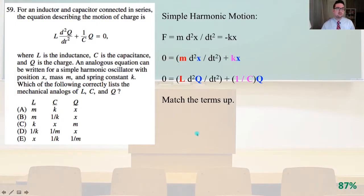Number 59. For an inductor and capacitor connected in series, the equation describing the motion of the charge is L(d²Q/dt²) + (1/C)Q = 0, where L is the inductance, C is the capacitance, and Q is the charge. An analogous equation can be written for a simple harmonic oscillator with position X, mass M, and spring constant K. Which of the following correctly lists the mechanical analogues of L, C, and Q?